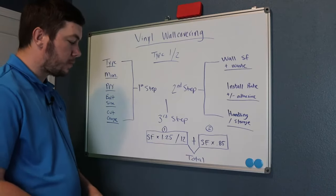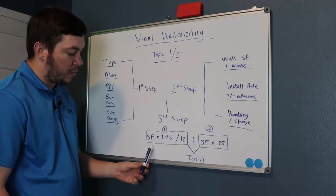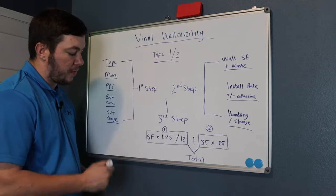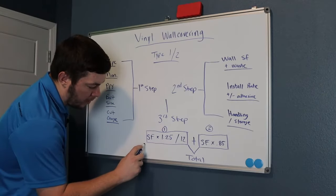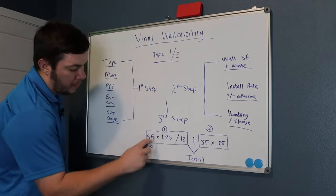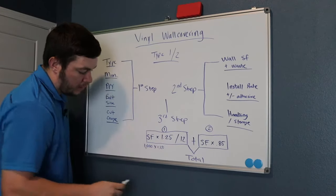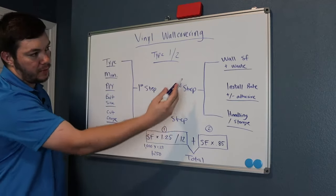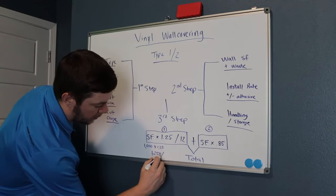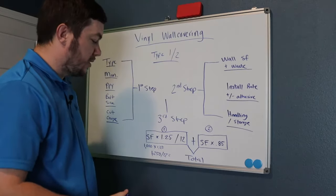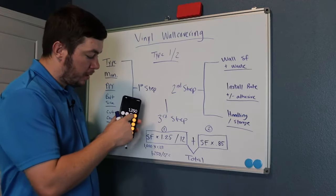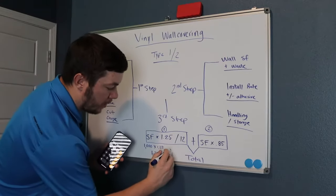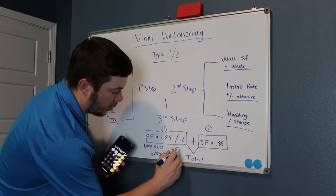Once you have all that information, we can move to the third step. Here's our formula. SF stands for square foot — this is the wall square footage. So you calculate your pattern, figure out what walls your pattern goes on from the drawings. Let's say it's a thousand square feet. You multiply that by 1.25, so that's 1,250 — that includes your waste. Then you divide that number by 12 to convert it to yards. So 1,250 divided by 12 is 104.16 — round up to 105 yards.